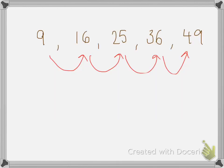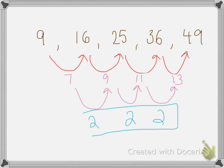An example is the sequence 9, 16, 25, 36, and 49. This one has first differences of 7, 9, 11, and 13. After that we find the second row of differences and we get 2, 2, 2. So when we get a constant common difference in the second row, it is known as a quadratic sequence.